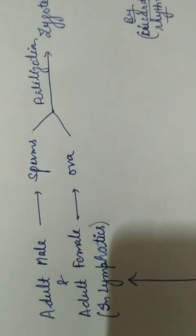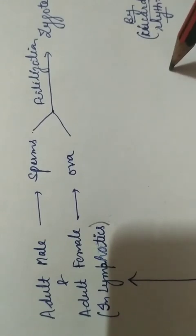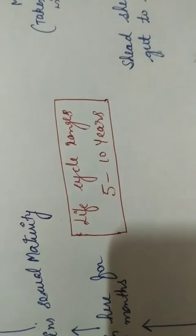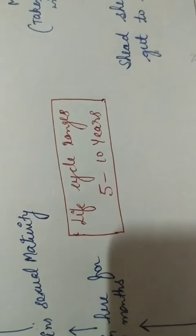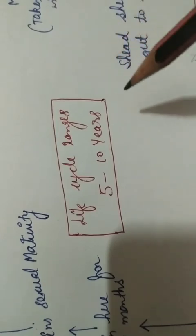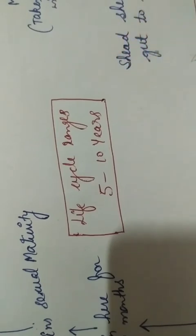The complete life cycle of the parasite, Wuchereria bancrofti, spans approximately 5 to 10 years in the body. We need to learn the microfilaria larva morphology and this life cycle thoroughly.